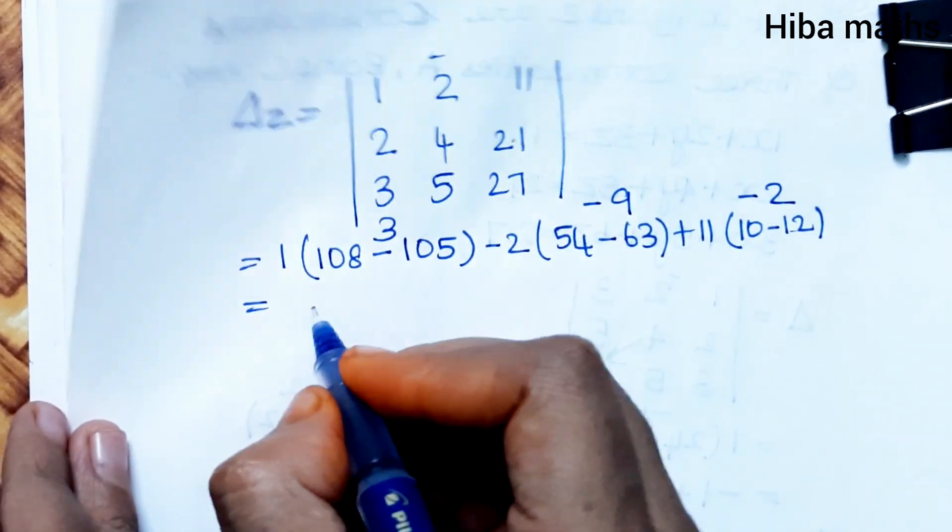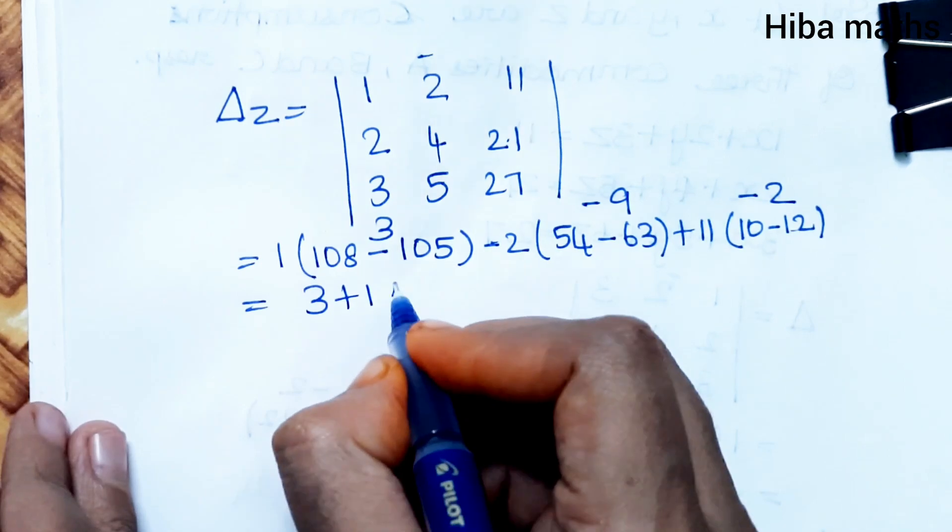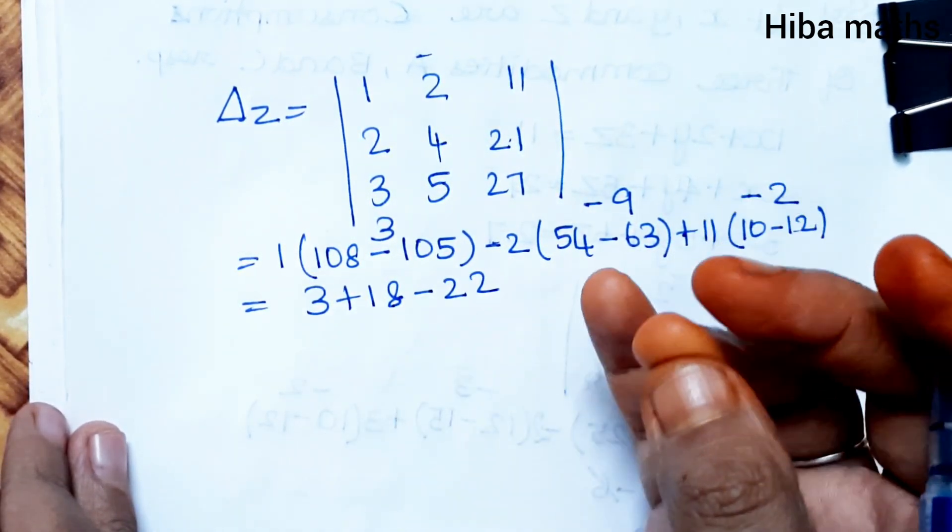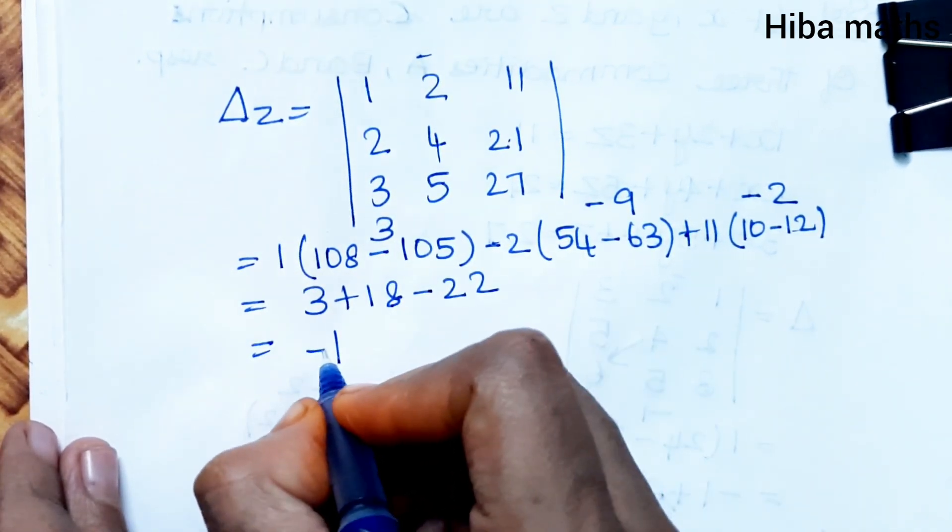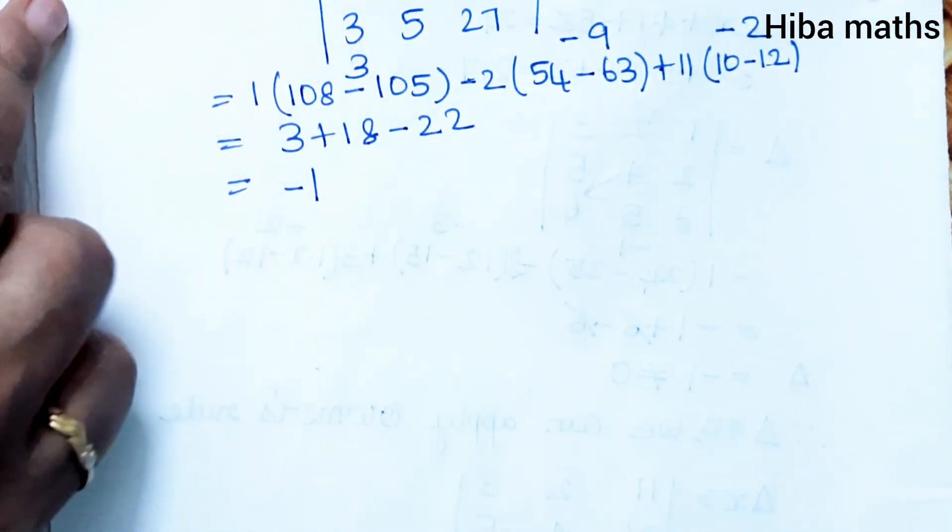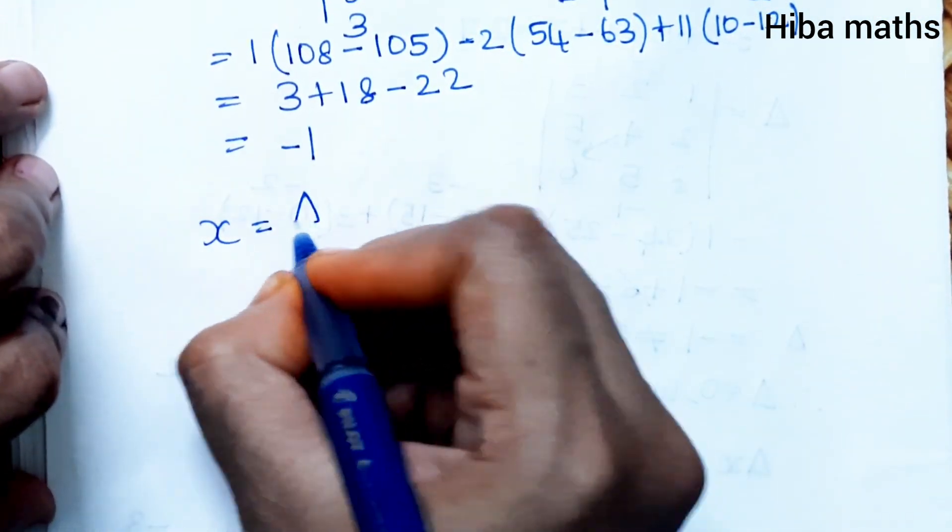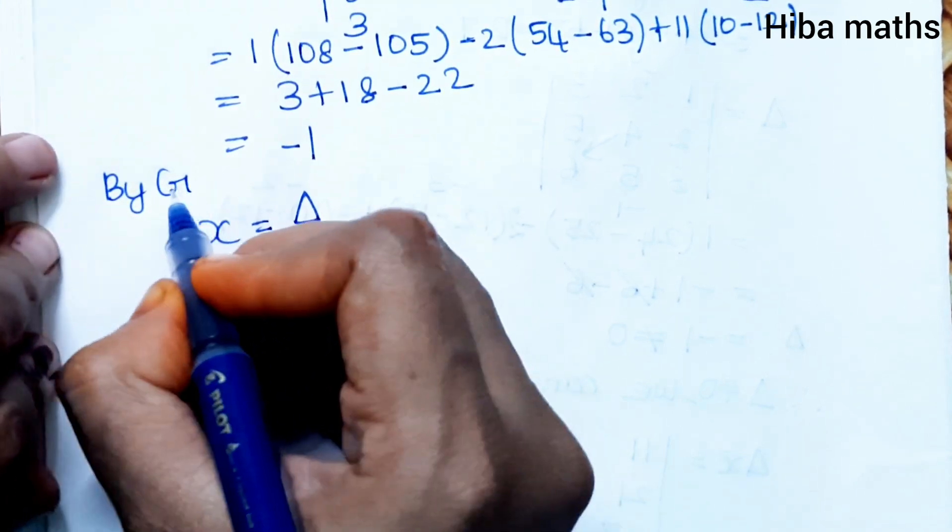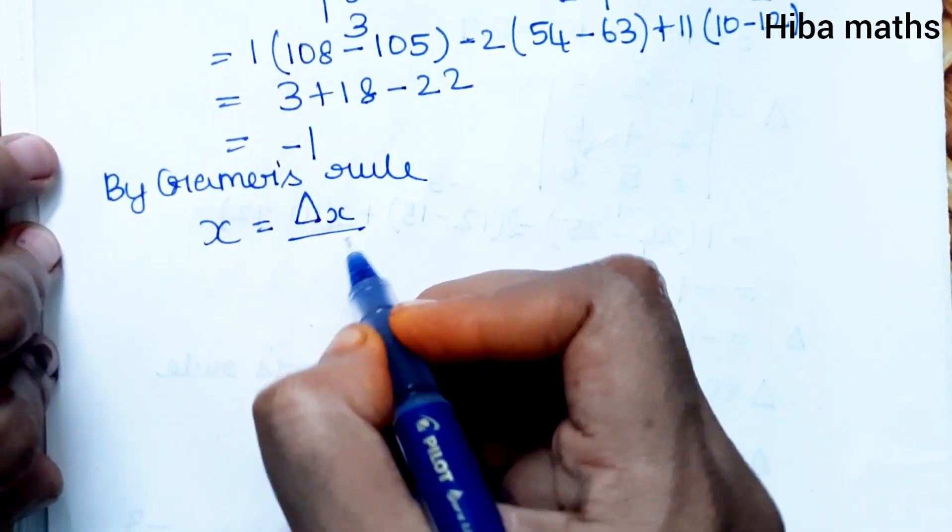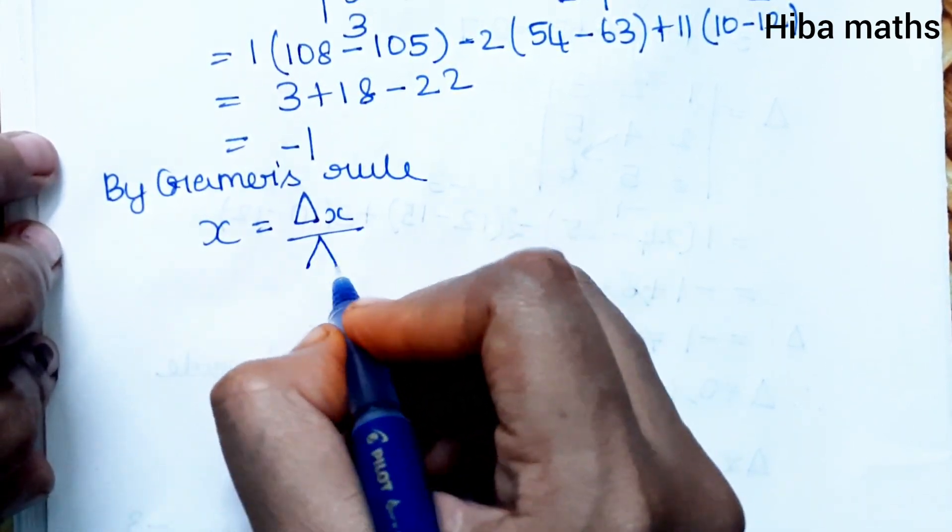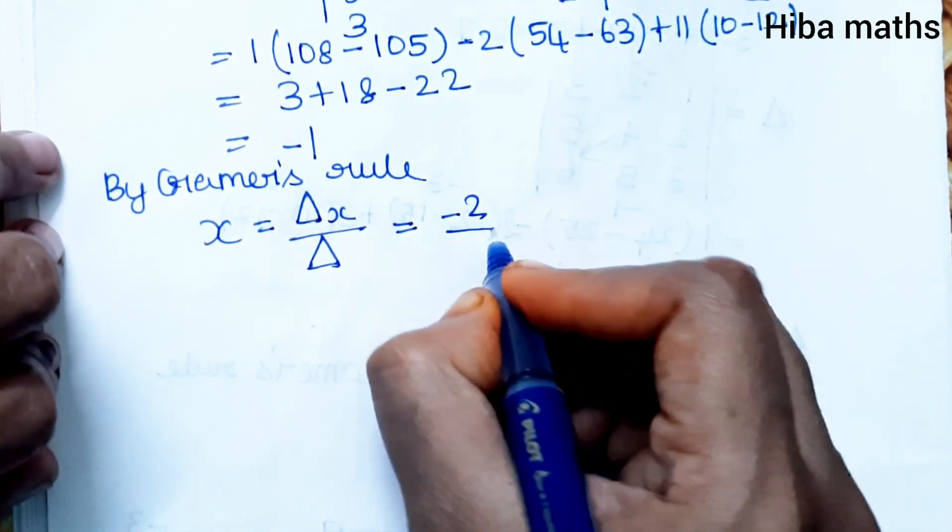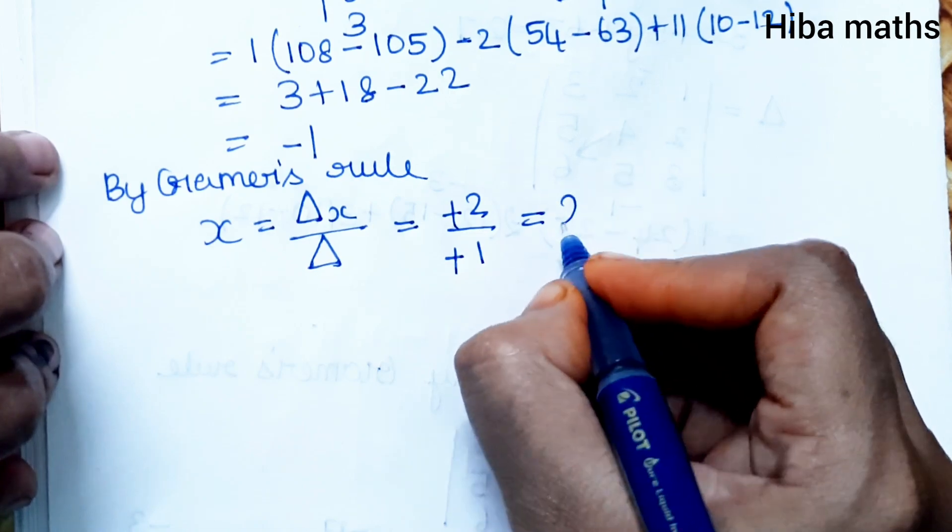Solving: 3 + 18 - 22 = -1. The answer is -1. Del Z equals -1.